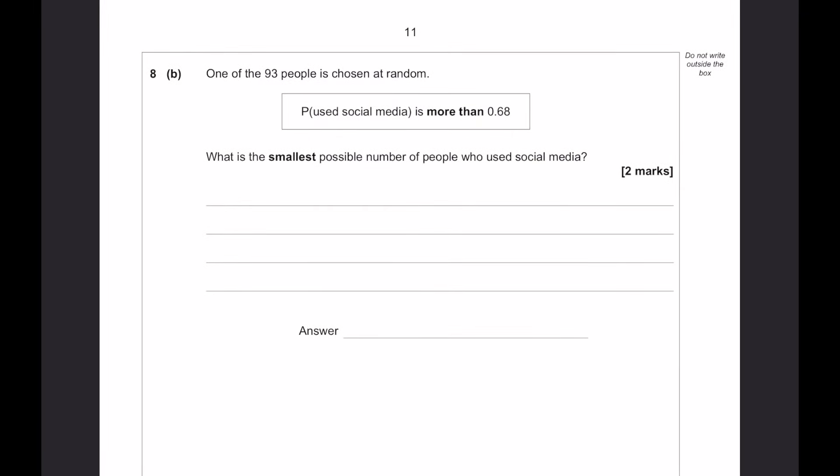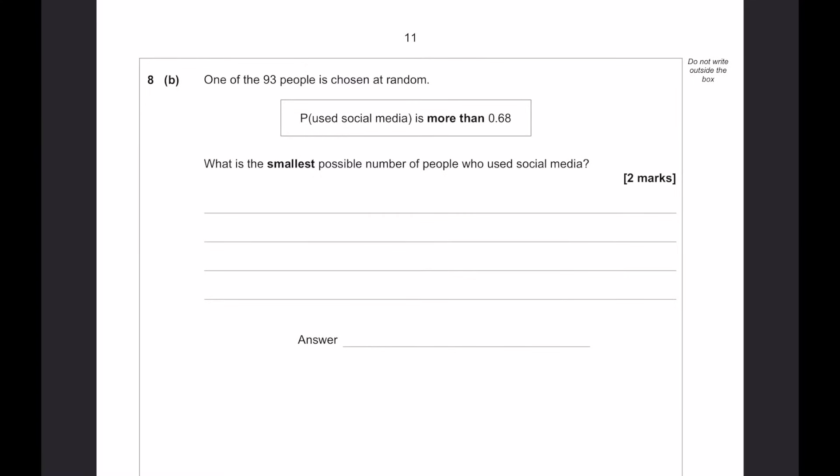75% of people answered yes played one game. So, more than one game played would be 75% of that which is 36 and the other one would be 12. 75% is just three quarters of 48. That's where I got that from. That's going to be 36. And then 48 minus the 36 is going to be our 12 there. One of the 93 people is chosen at random. The probability that they use social media is more than 0.68.